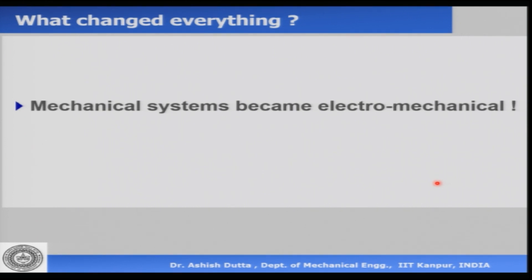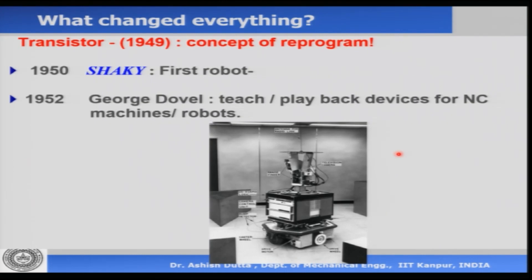What changed everything? Mechanical systems became electromechanical — a lot of electronics came in, programming came in, and we have sensors and actuators. The invention of the transistor, somewhere around 1948-49, gave rise to the concept of reprogram. Before this date, all devices were mechanical and we could not reprogram them. With the invention of the transistor came the concept of reprogram — you could program a mechanical device and if you change the program, it would behave differently. 1950 saw the first generation of the first robot called Shakey at Stanford University — a mobile robot with wheels, very simple sensors in front, which could do very basic path planning.